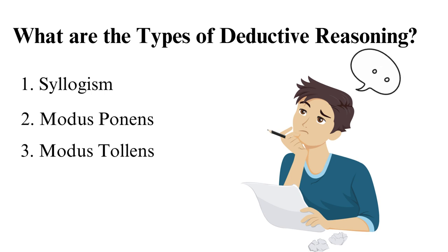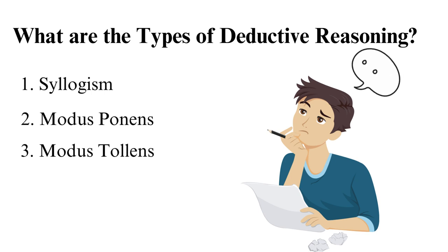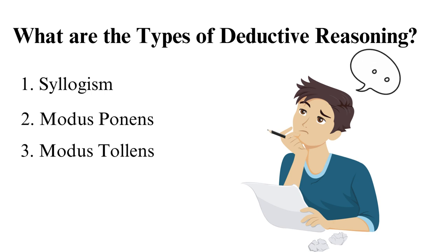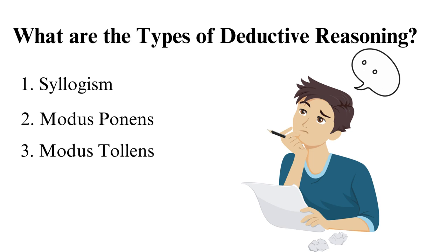Third, modus tollens: it's also known as the law of contrapositive, as it's the opposite of modus ponens. According to this law, the second statement disputes the first one.